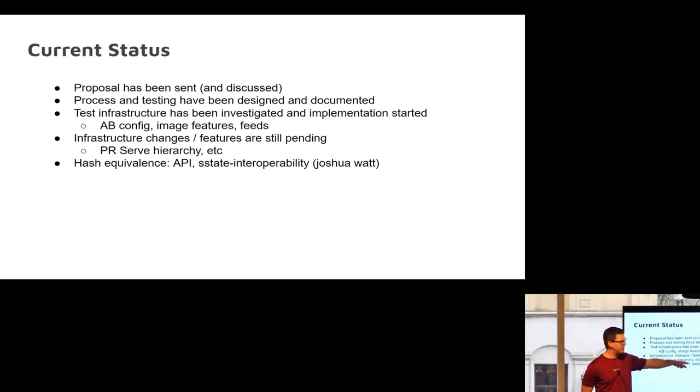In particular, the PR server hierarchy is the biggest thing that needs to get done before April. Hash equivalents API state interoperability, we can thank Joshua. He was already doing it. We knew we were going to need it. That's something that we're just leveraging.